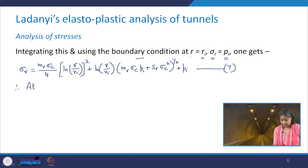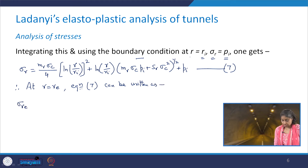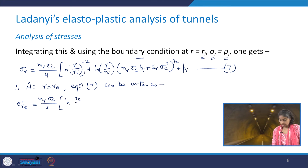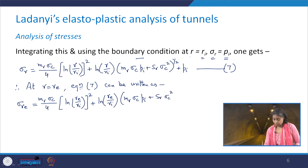At r = r_e, equation 7 gives: σ_re = (m_r · σ_c / 4)[ln(r_e/r_i)]² + ln(r_e/r_i) · [m_r · σ_c · p_i + s_r · σ_c²]^(1/2) + p_i. This is equation number 8.